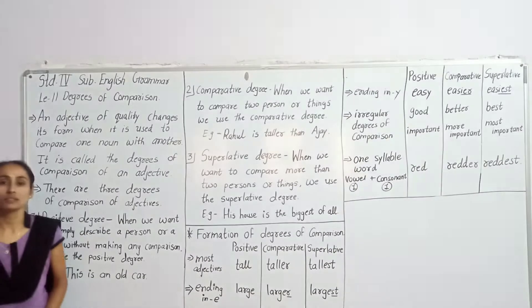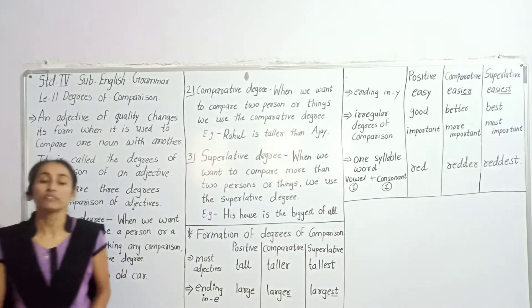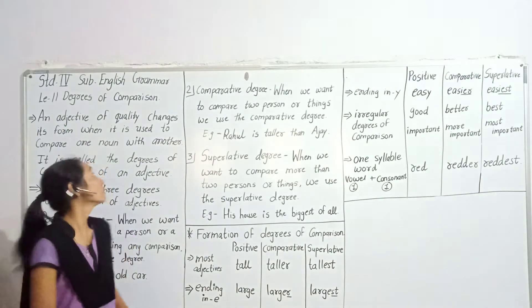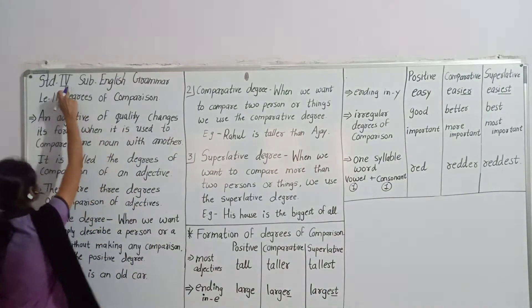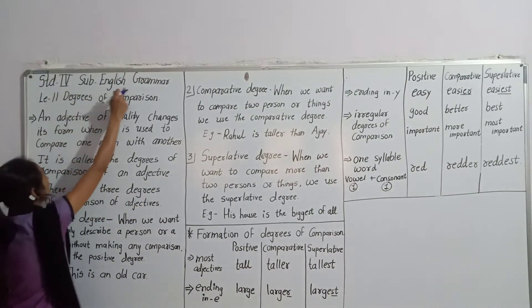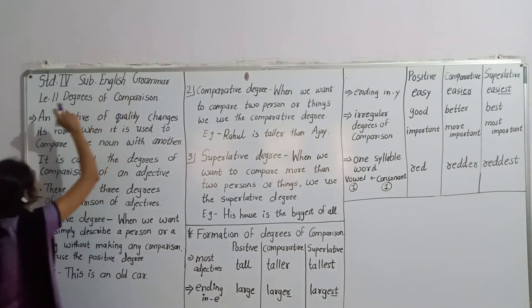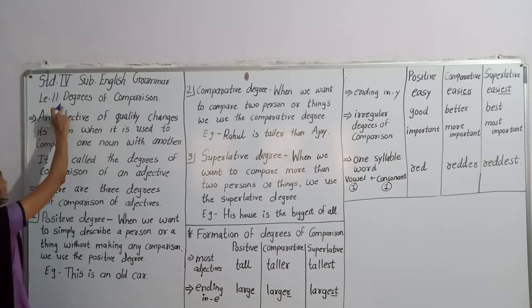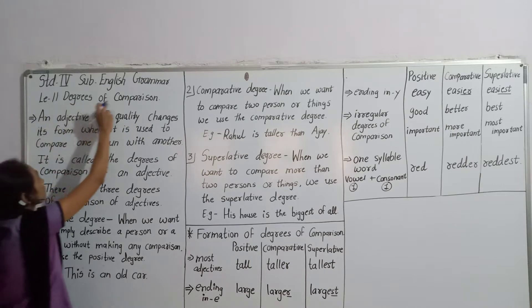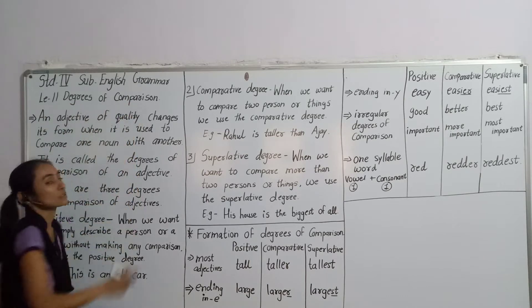Hello students, today we learn. We start our fourth English lesson, lesson number 11: Degrees of Comparison.